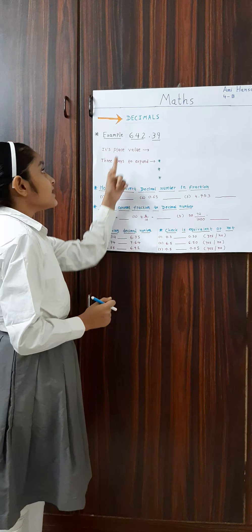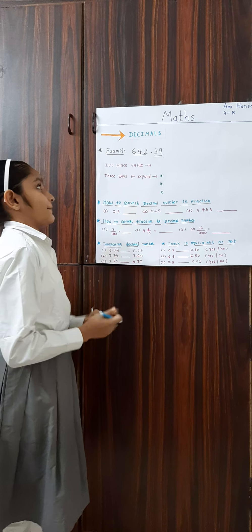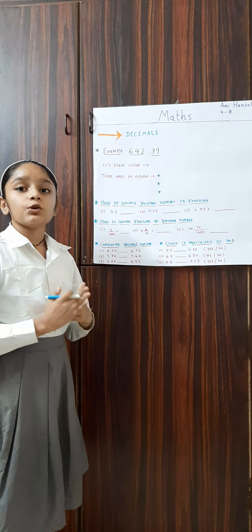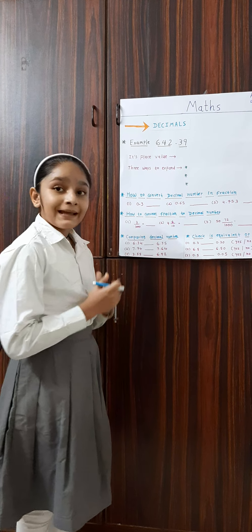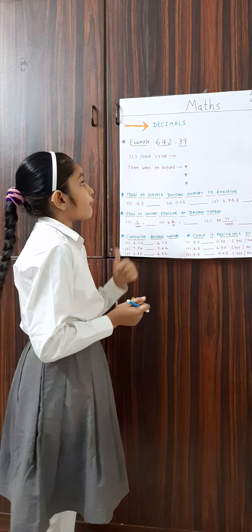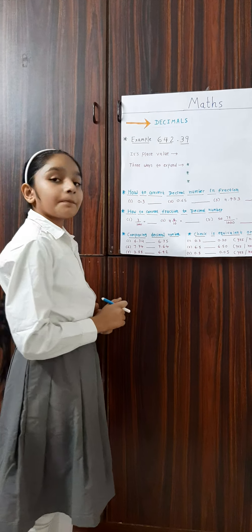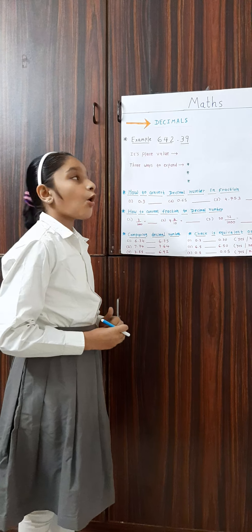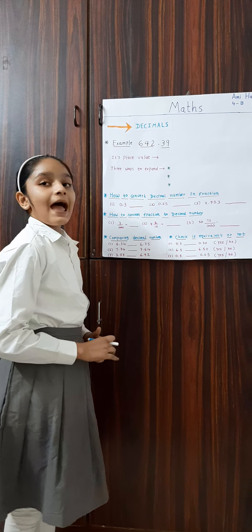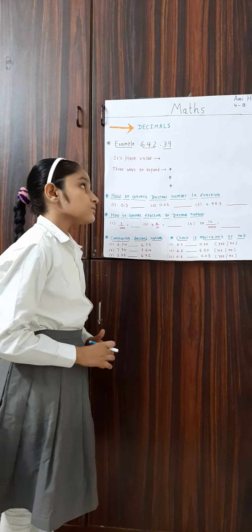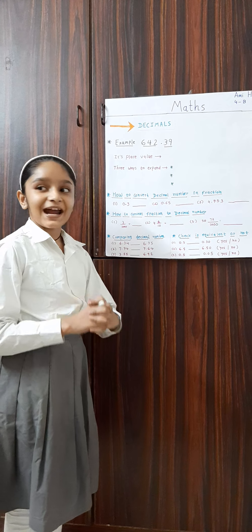The example is 642.39. The place value of the whole number increases from right to left, and the place value of the fraction part decreases from left to right.